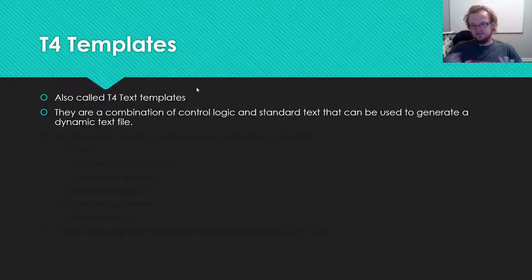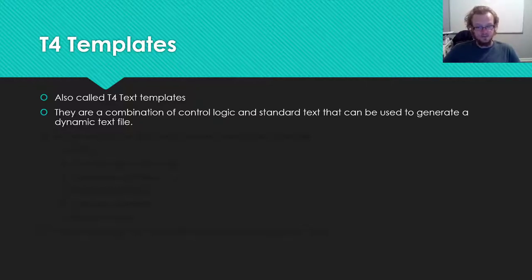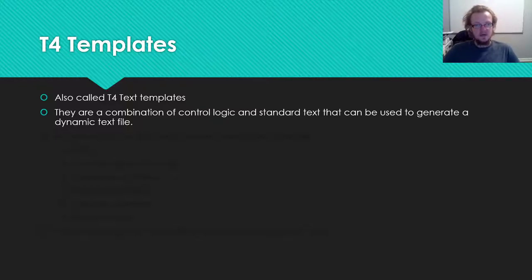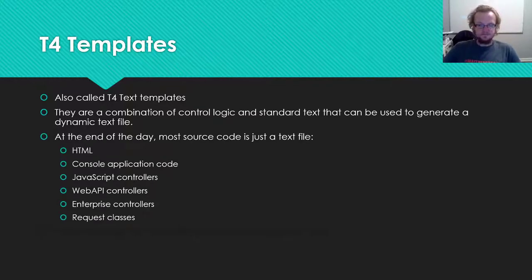Enter T4 templates. These are also called T4 text templates, and they provide a combination of control logic — letting you execute C# inside of a template — and standard text that lets you print things to a file. What it does is let you generate a dynamic text file that can be reconstituted into whatever type of file you want.